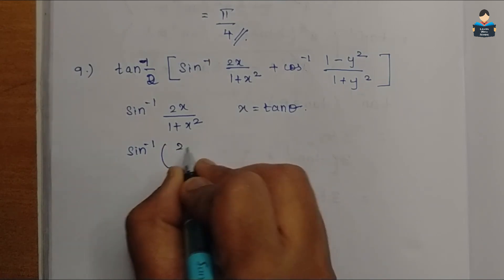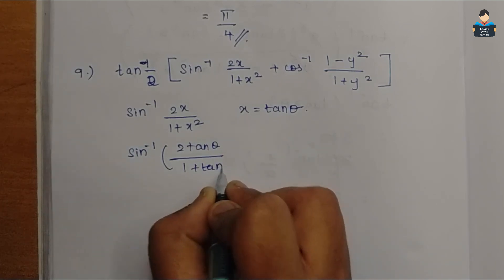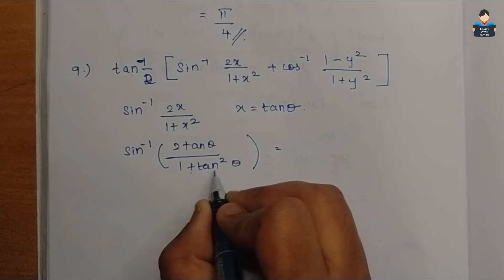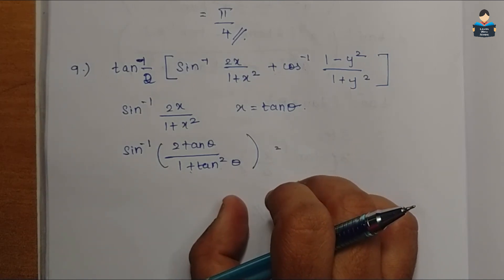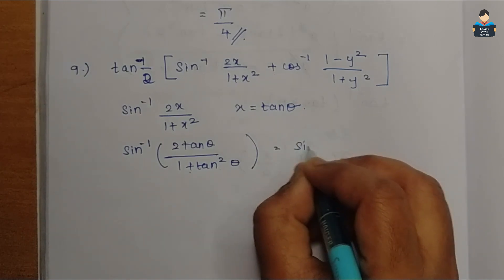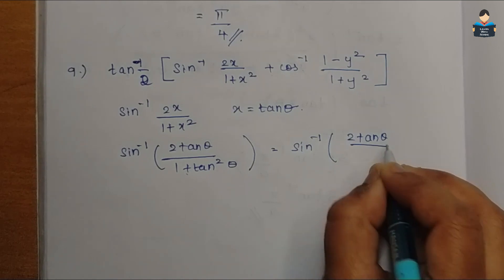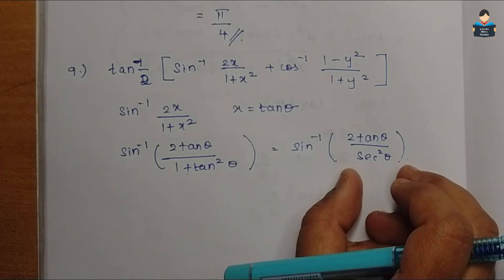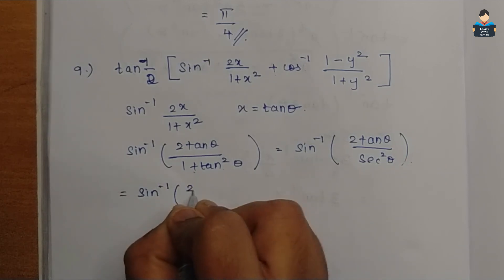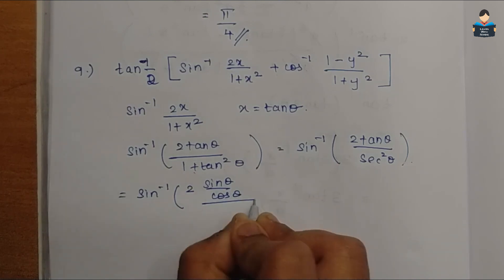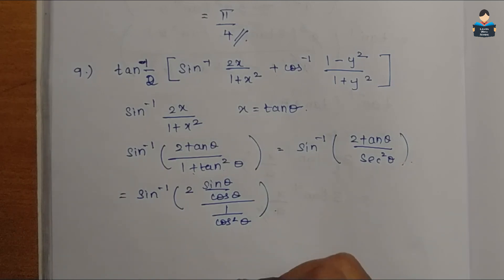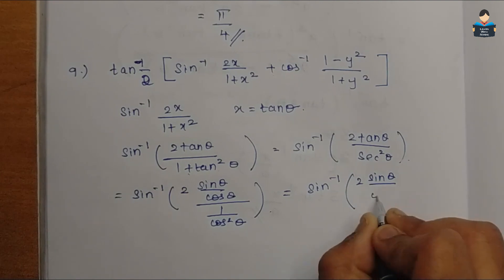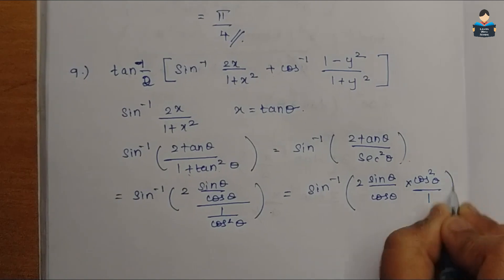Let x equal tan θ. Using the identity from 10th standard: 1 plus tan square θ equals sec square θ. So sin inverse of 2 tan θ by (1 plus tan square θ) becomes sin inverse of 2 tan θ by sec square θ. Since tan equals sin by cos, and sec square is 1 by cos square, we expand accordingly.